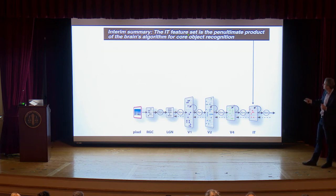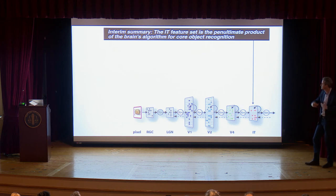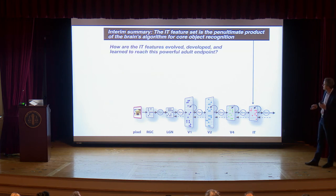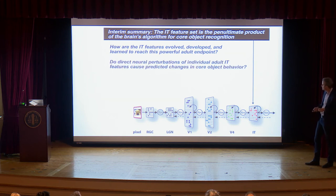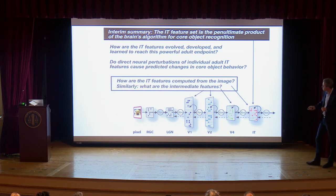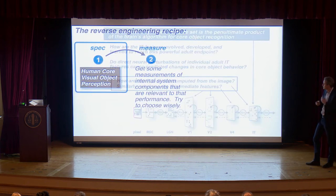That's a setup to ask the harder questions: how are these features evolved, developed, and learned to reach this powerful adult endpoint? Do direct perturbations of individual neurons cause perceptual changes predicted by the models? What I will tell you about is the question we've been working on for the last decade: how do IT features get computed from the image, and what are the intermediate features along the ventral stream?